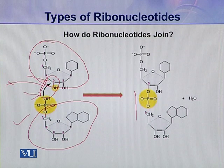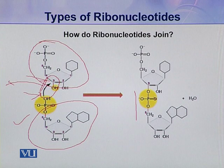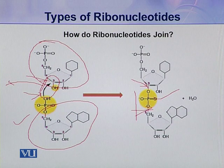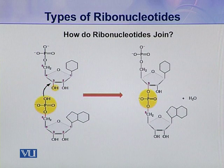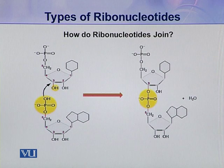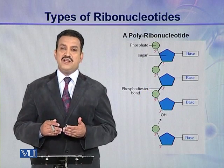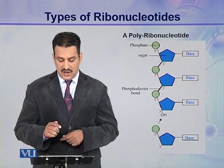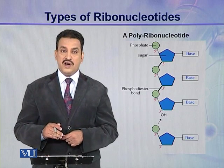Why is this called phosphodiester linkage? Because one phosphate group is present, and this phosphate group is linked with one pentose via an ester linkage, and a second ester linkage is present here — so there is one phosphate and two esters, hence phosphodiester. In this way, many ribonucleotides join together and make a polymeric chain called a polyribonucleotide, or ribonucleic acid.